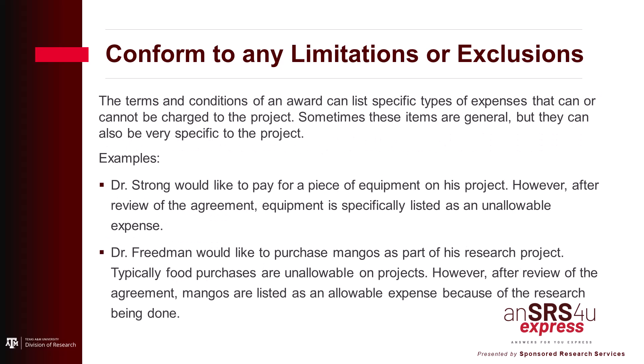The next thing we consider when checking for allowability is: does this expense conform to any limitations or exclusions listed in the agreement? Terms and conditions of an award can be very specific or very broad. They can tell you specifically the things that you can charge and things that you cannot charge. We have to always be making sure that any expense that comes through is allowable for that specific award.